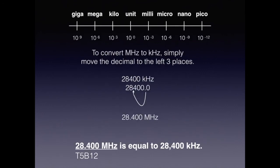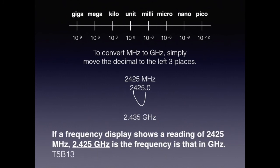That's all for decibels. To convert megahertz to kilohertz, move the decimal place three places to the right. Know for the exam that 28.4 megahertz is equal to 28,400 kilohertz. To convert megahertz to gigahertz, simply move the decimal to the left three places. So 2425 megahertz becomes 2.425 gigahertz. On the exam, if the frequency display shows 2425 megahertz, 2.425 gigahertz is the frequency in gigahertz. Well, that's it for now — I hope you enjoyed today's lesson. If you like this series, please subscribe to my YouTube channel. Until next time, never stop learning. See you next time!